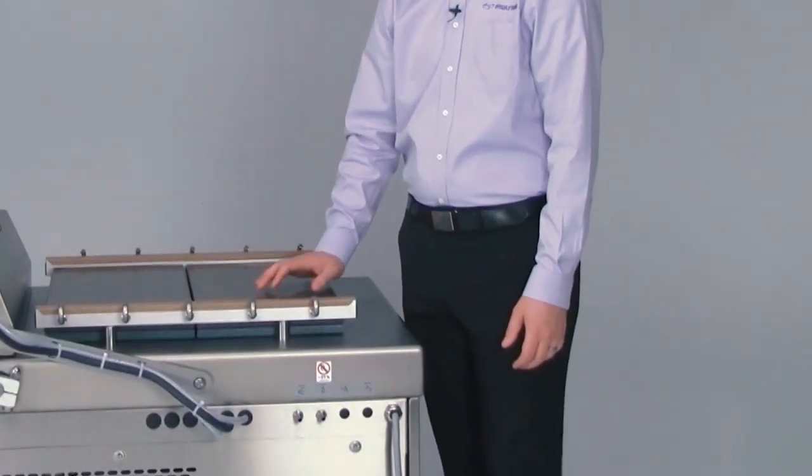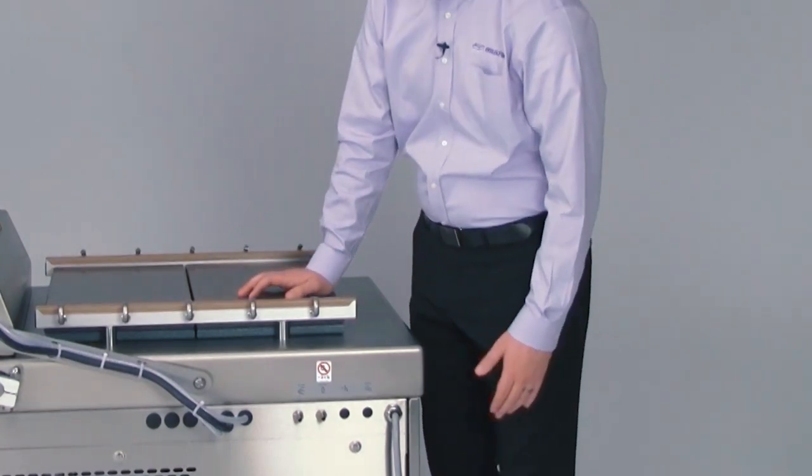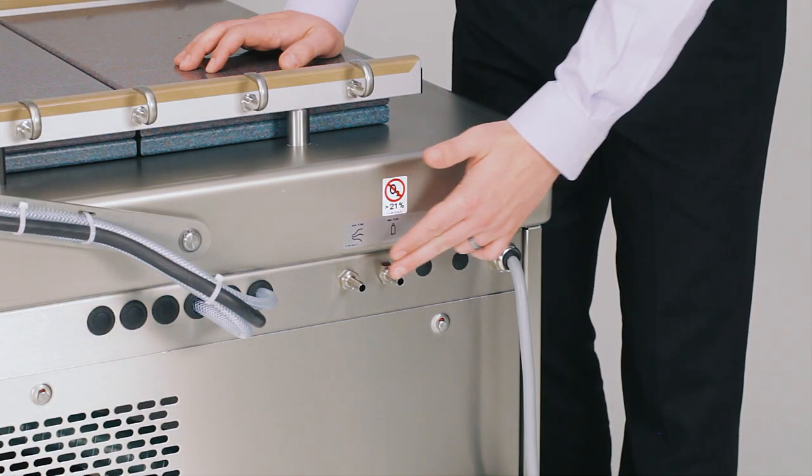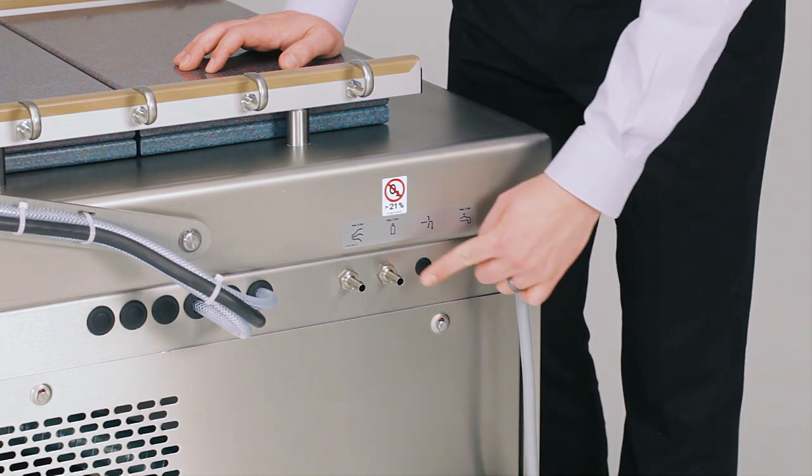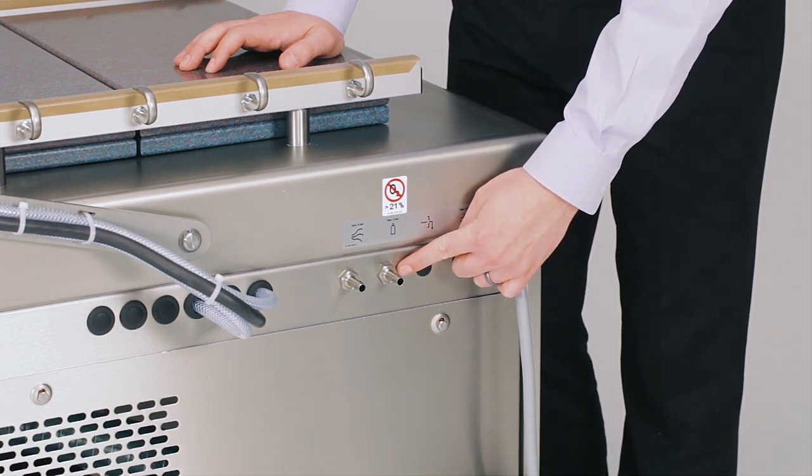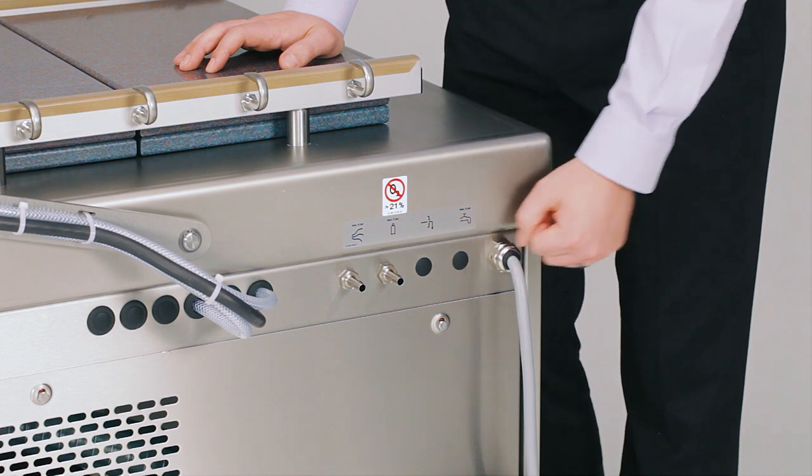This Multivac P600 double chamber machine has two particular nozzles on it. One is the gas flush option and this is where you would connect your gas connection for your inert gas. Note that you will still need a regulator on your gas cylinder.